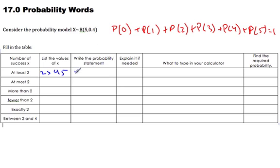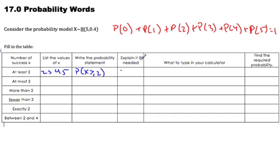A probability statement would mean I want the probability that my random variable X is greater than or equal to 2. So I know I want 2, 3, 4, and 5. That's the same thing as saying 1 minus the probability of 0 minus the probability of 1. Those are the same thing.